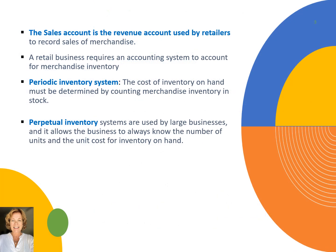What else is different for a merchandising business compared to a service business? The sales account is the revenue account used by a merchandising business or retailer who records sales of merchandise. We will not be using fees income as we did in prior chapters. A retail business requires an accounting system to account for merchandise inventory that it purchased, that has been sold, and that is on hand at any time during the accounting cycle.